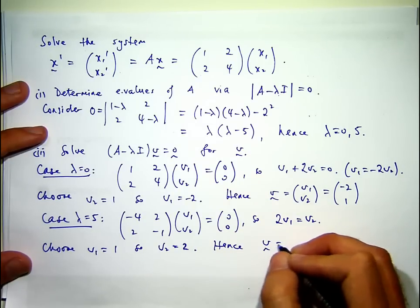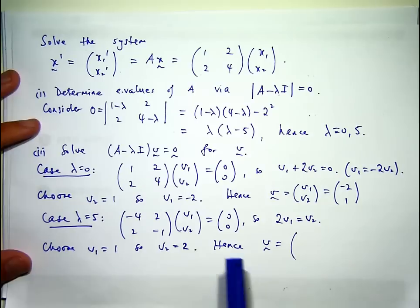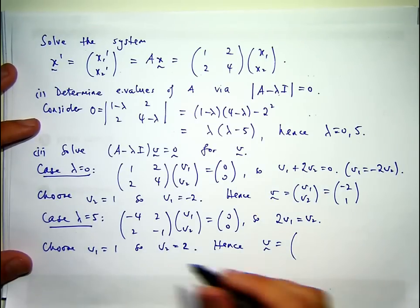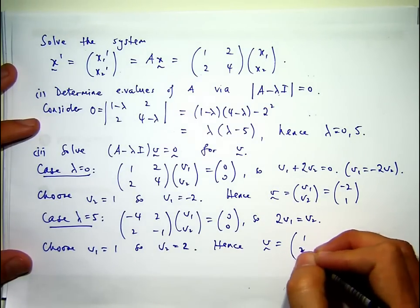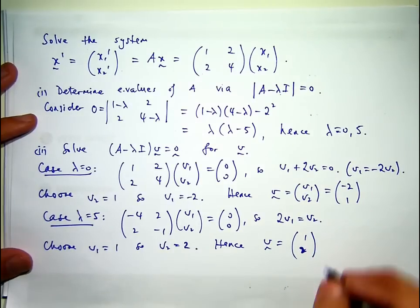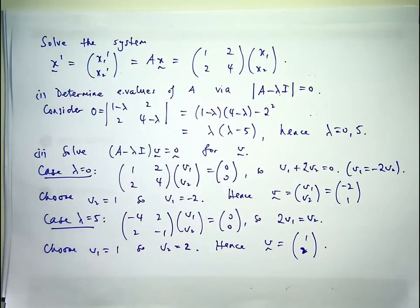So the eigenvector in this case will be one, two. We've spent a fair bit of time calculating these eigenvalues and eigenvectors. Let's actually apply them now and we can essentially write down the solution to our original system.